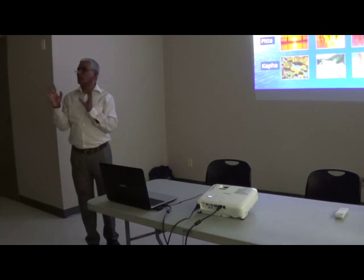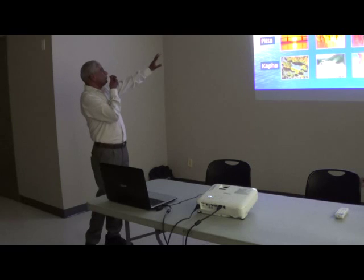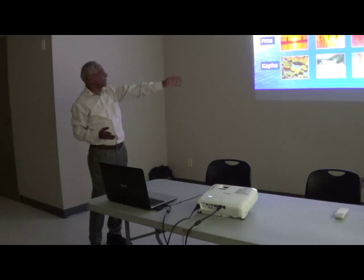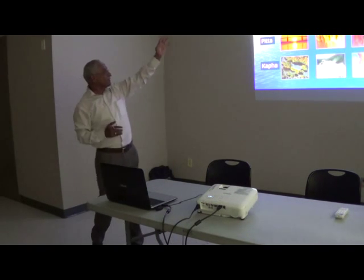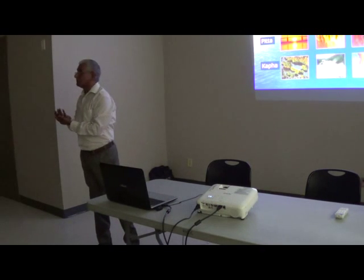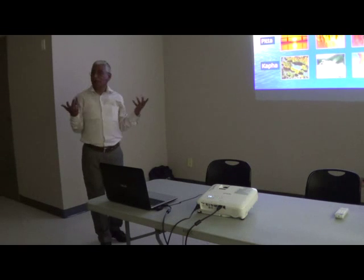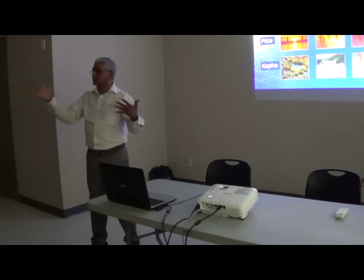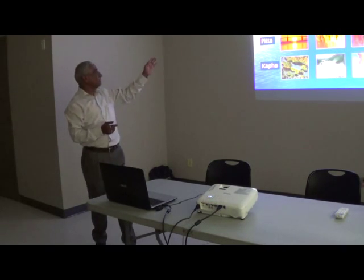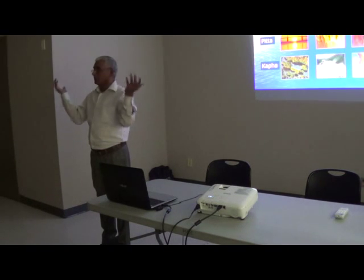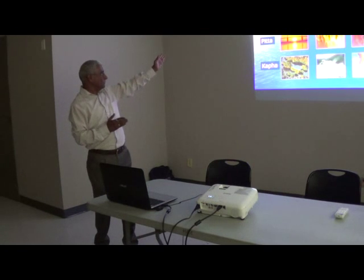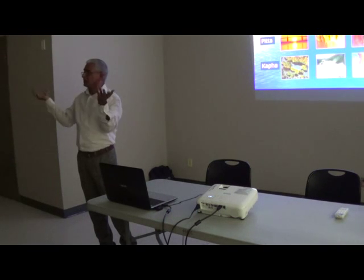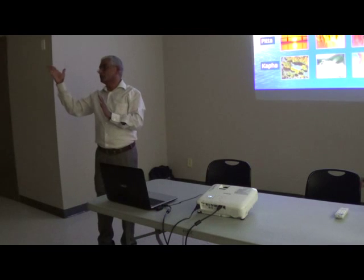How do you know that a dosha is out of balance? A quick understanding: if Vata is normal in nature, there is a nice breeze. You go in the mountains and enjoy it. But if it is too much, there is a thunderstorm or windstorm. In the body, if Vata is out of balance, there could be deformity, joint pains, osteoarthritis — all kinds of arthritis.